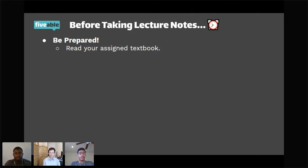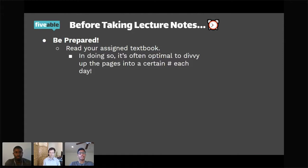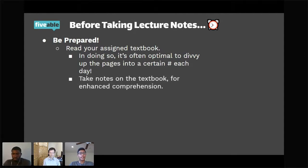I really recommend divvying up the pages that you need to know and doing a certain number each day. For example, if I was reviewing the Mongol Empire and I had 30 pages on the topic with three days to do it, I would do 10 pages a day. I used AMSCO, but if you have any other textbook — Quizlet, Princeton, Barron's — feel free to ask us about it.